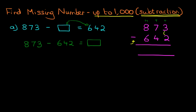OK, the units. 3 minus 2 is 1. How about the tens? We've got 7 minus 4. 7 minus 4 is 3. On to the hundreds. 8 minus 6. 8 minus 6 is 2. And that is the answer, 231.